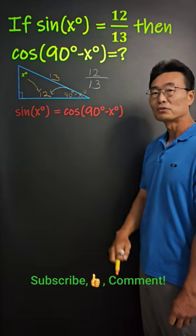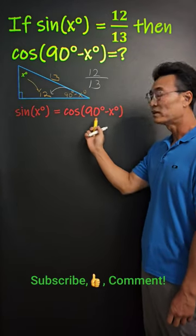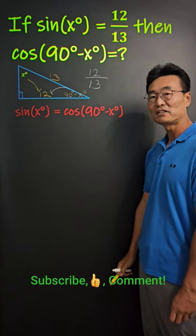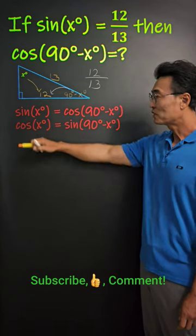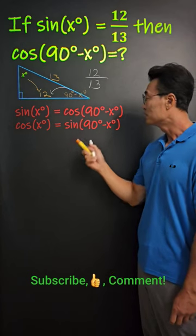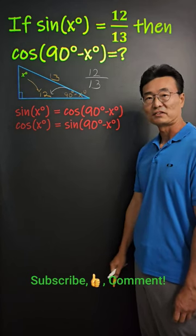Sine of x degree will always equal cosine of 90 degrees minus x degrees, and vice versa, cosine of x degree will always equal sine of 90 degrees minus x degrees.